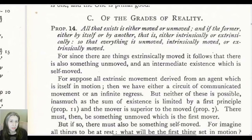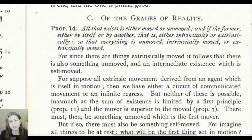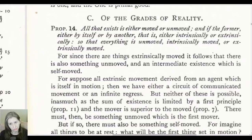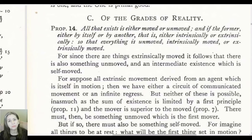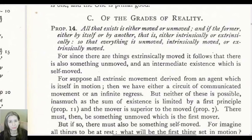Today we're going to be starting a section of the text that E.R. Dodds labeled 'On the Grades of Reality,' and we're going to start by looking at what is moved versus what is unmoved. Proposition 14: all that exists is either moved or it's unmoved. And if it's moved, then it's either moved by itself or moved by another — that is, either intrinsically or extrinsically. So everything is unmoved, intrinsically moved, or extrinsically moved — three different categories.